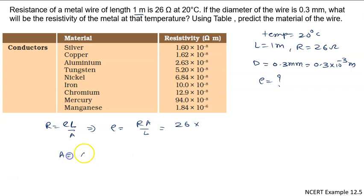Area is known as basically πr², and r is half of the diameter. So radius means d/2 whole square, so it will be πd²/4. What is the value of π? That is 3.14. What is the diameter? That is 0.3 × 10^-3.